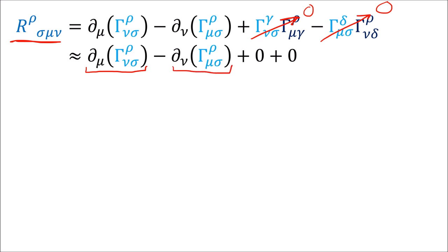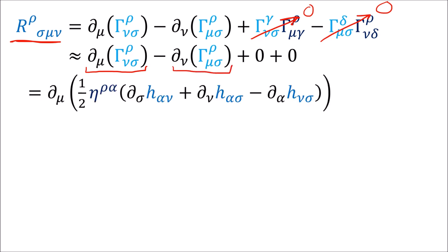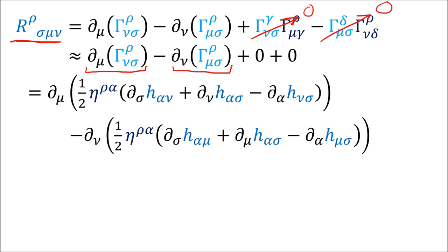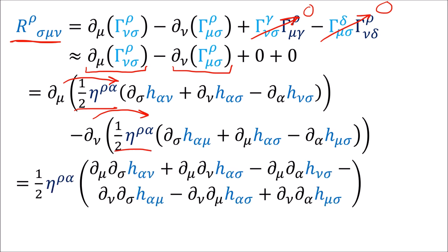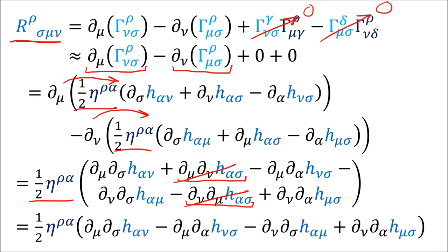If we substitute in the formulas for the connection coefficients, we can distribute the partial derivatives and pull the one-half eta out in front, leaving us with six terms of two partial derivatives each. Since the order of partial derivatives doesn't matter, the partial-mu-partial-nu term cancels with the partial-nu-partial-mu term, so we're left with a formula with four terms.